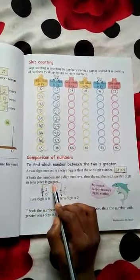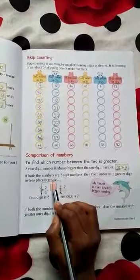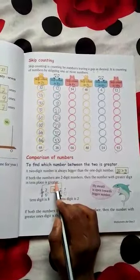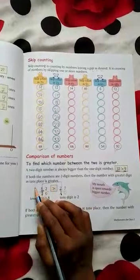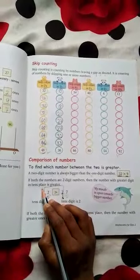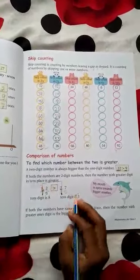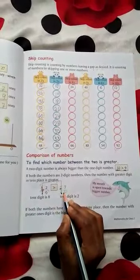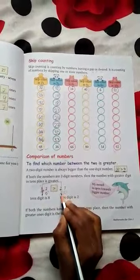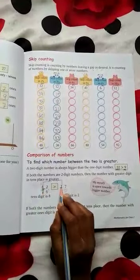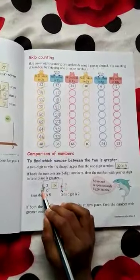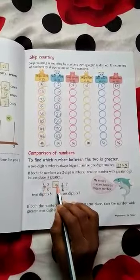If both the numbers have same digit in tenth place, we have to look at the ones place. In tenth place, 8 is greater than the other number.